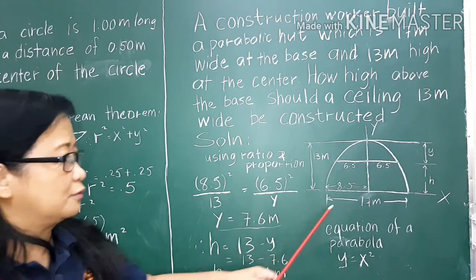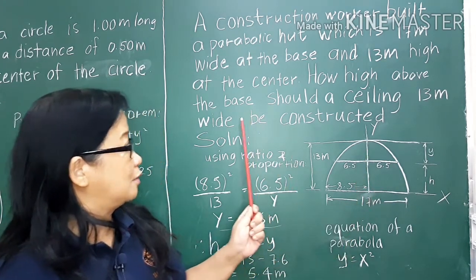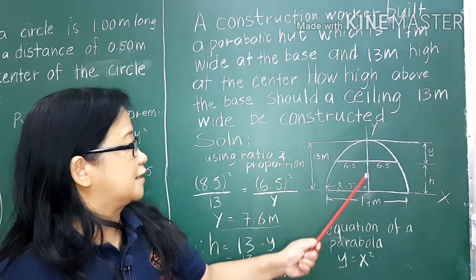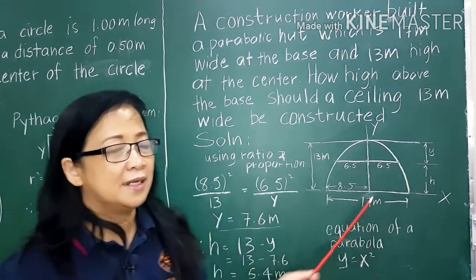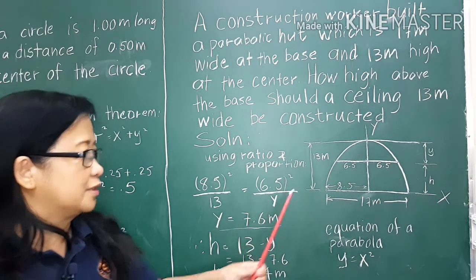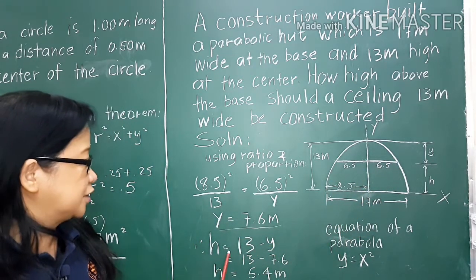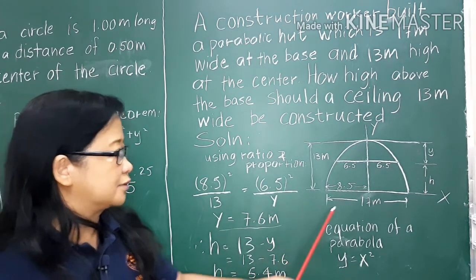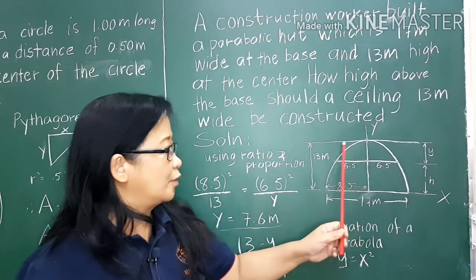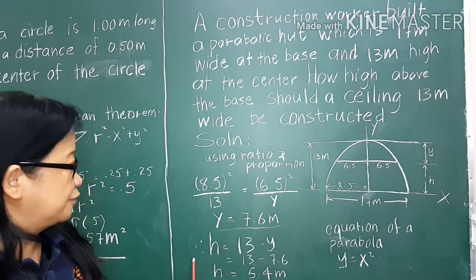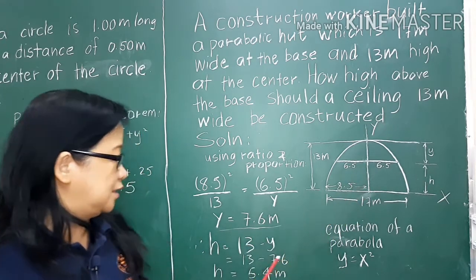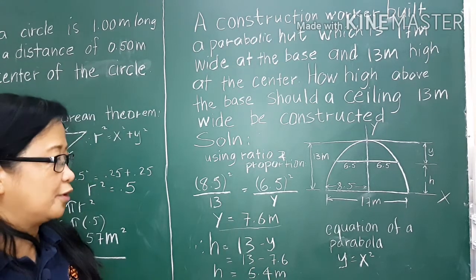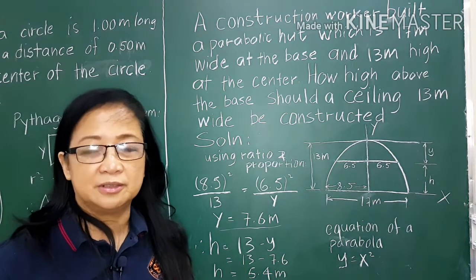We have solved y, which is the height from the top of the hut down to the ceiling level. What is required is the height h from the base to the ceiling. Since we have y, it is easy: h equals the total height 13 minus the small parabola height 7.6. Therefore the height at which the ceiling should be constructed is 5.4 meters.